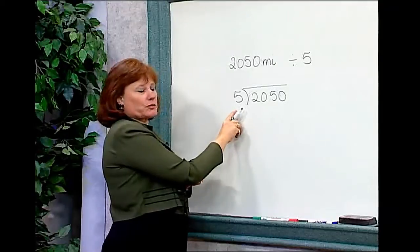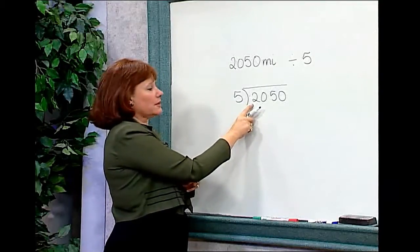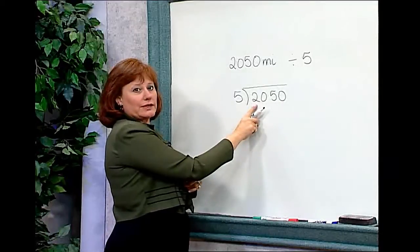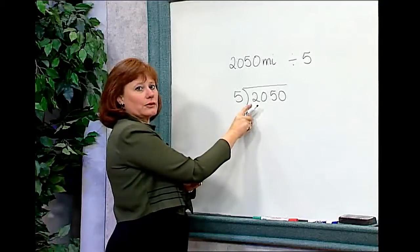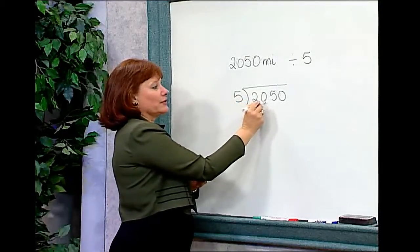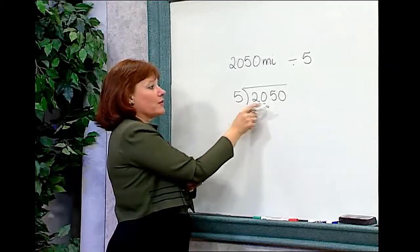When I start doing my division problem, I'm going to look to see if five will go into the first digit. Does five go into two evenly? Well, no it doesn't. I can't think of anything I can multiply by five to make it equal two. Therefore, I'm going to have to check out the first two digits.